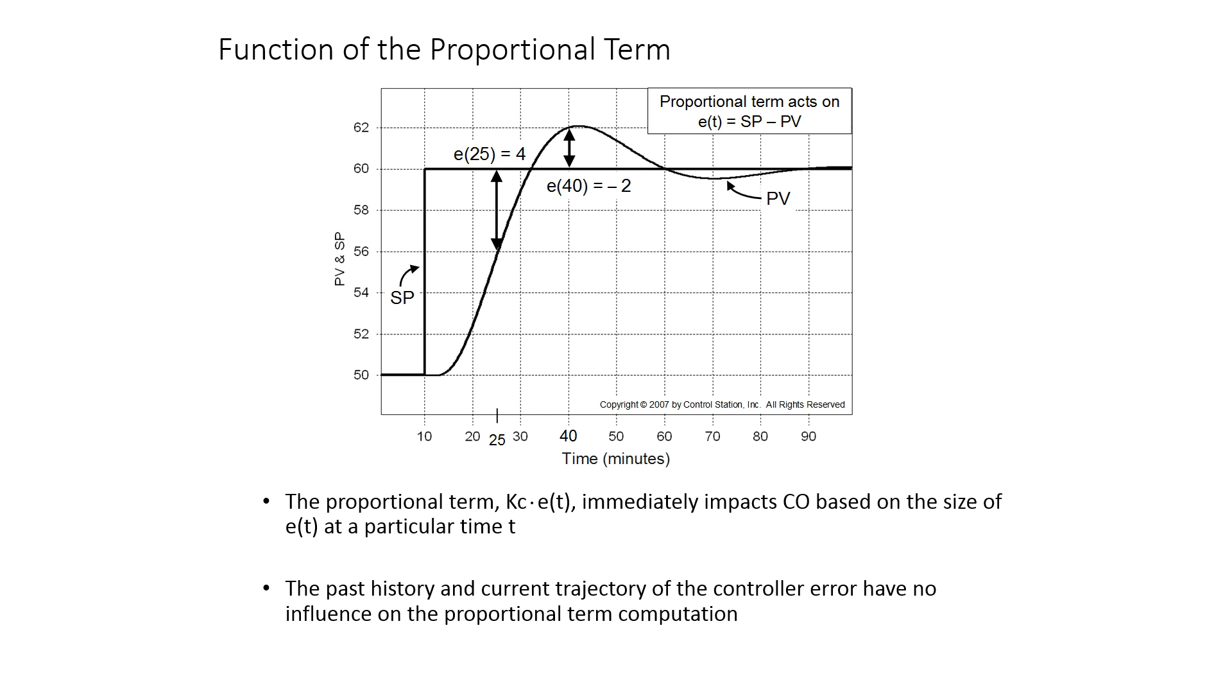First of all, we're going to take a look at the error. If we have a set point change, so this is a set point, and then the process variable that tracks up like is shown here with a little bit of overshoot, instantaneously we're going to have a certain amount of error. That's going to be the error.